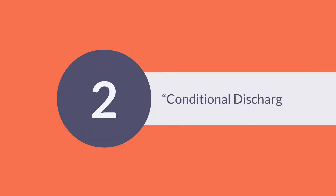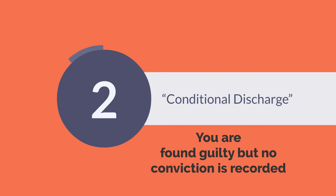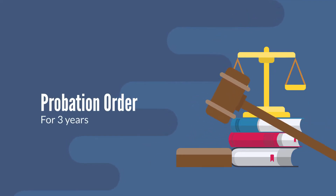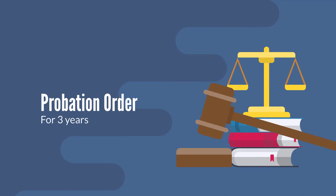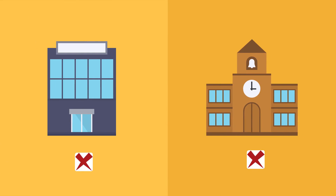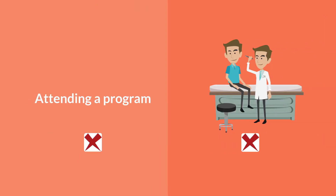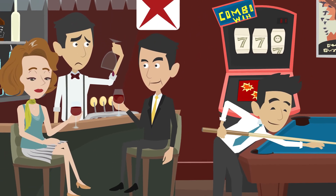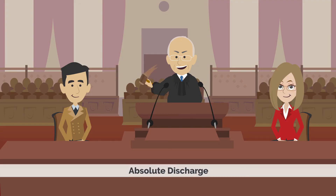The second type of punishment is called a conditional discharge. Similar to an absolute discharge, you are found guilty but no conviction is recorded. However, there will be conditions placed on you for a specified time in the form of a probation order, which can be in effect from one to three years. The conditions will relate to your conduct or the circumstances that led to the offense, such as not going to specific places, attending a program or undergoing treatment, and not drinking or using drugs. The discharge stays on your record for three years after the probation order is completed, at which time it is removed and becomes an absolute discharge.